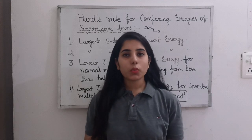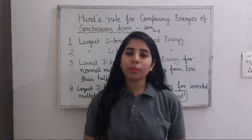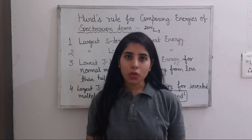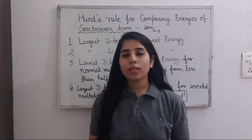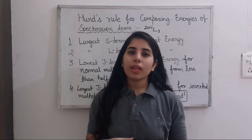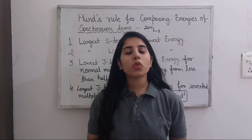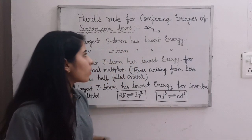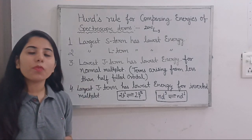Similarly, nd⁹ can be written as nd¹, and from both of these you will get the same spectroscopic terms. I hope that now normal multiplets and inverted multiplets are clear. Along with this, I hope all the rules for comparing energies of spectroscopic terms are also clear — you will easily be able to identify which spectroscopic terms have higher or lower energy.